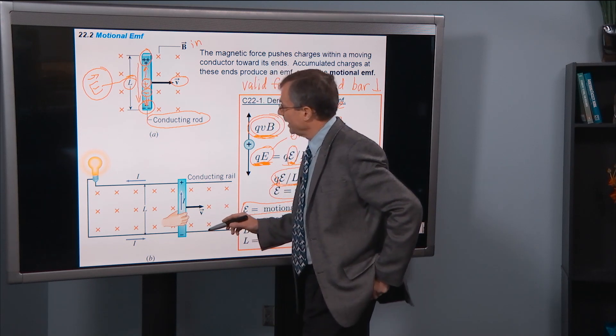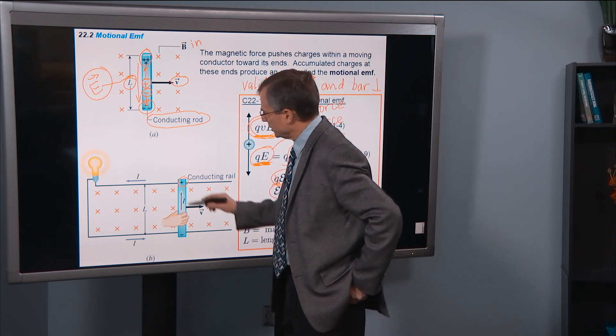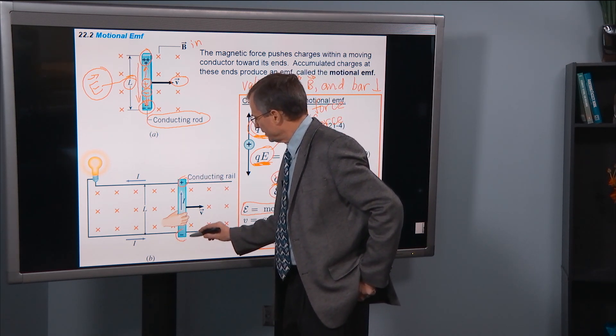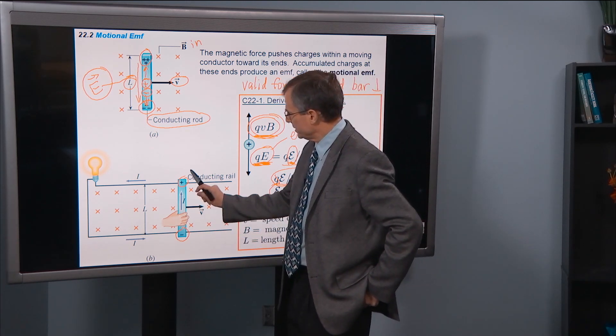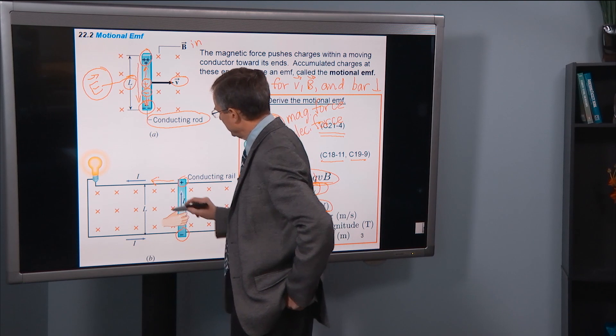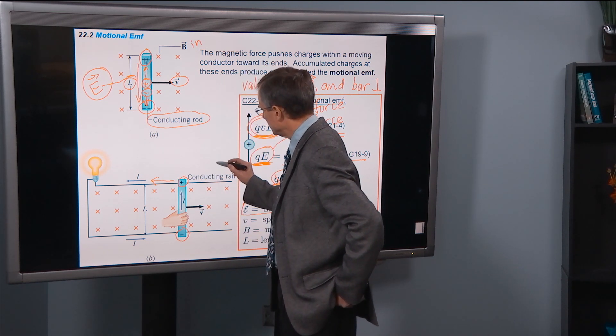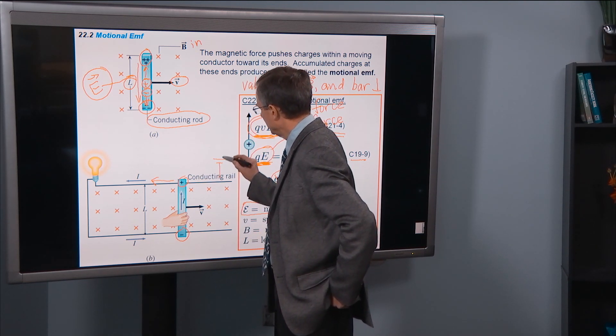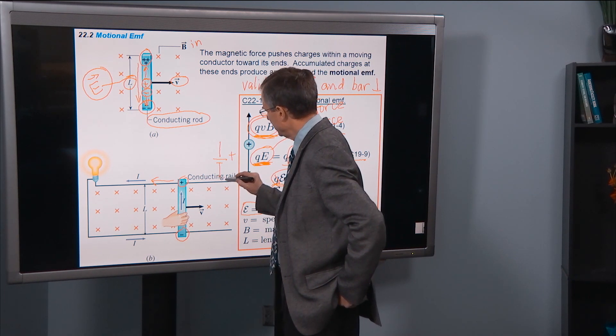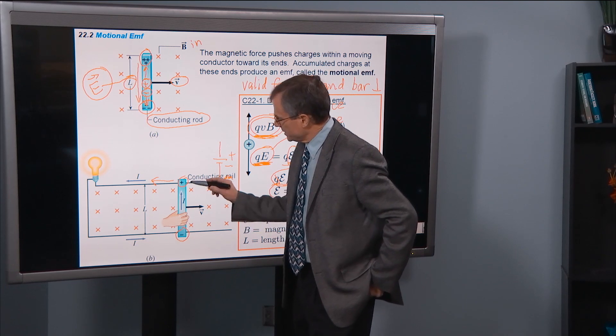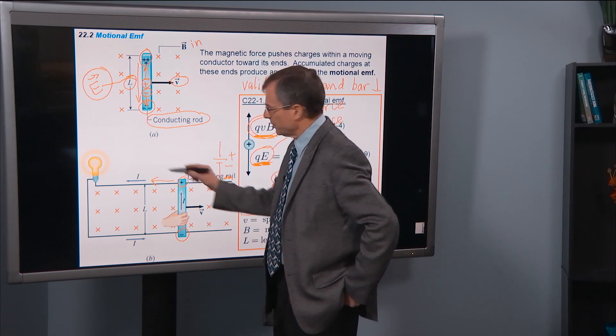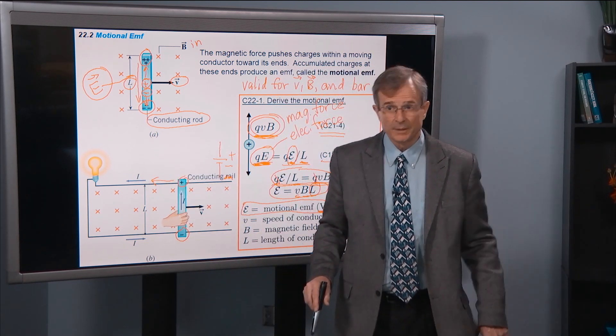Then what you're going to get is positive charge accumulated up here, negative charges accumulated down there. And a current driven as if this were a battery. So you can think about this as a battery with a positive terminal on this side, the negative terminal on this side, which will drive current in this direction. And you could power a light bulb.